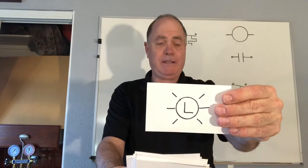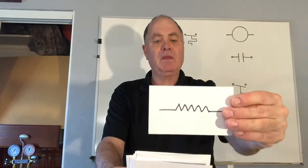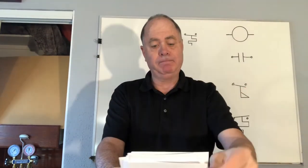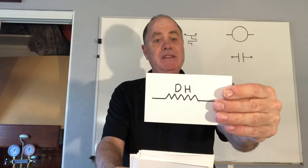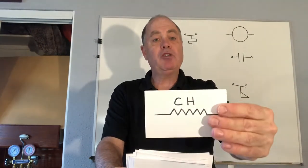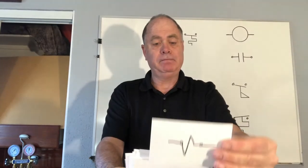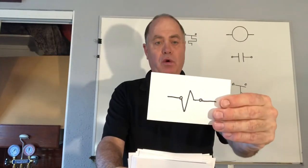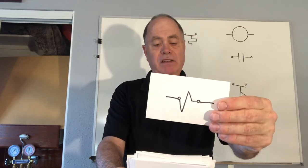This is a light. This is a heater. There's a defrost heater. Crank case heater. This is a solenoid coil, also a symbol for magnetism.